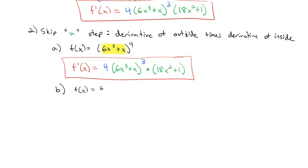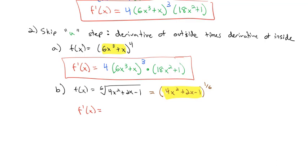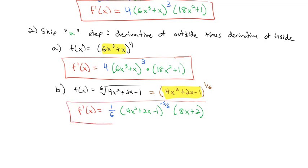Let's try finding the derivative of the sixth root of (4x squared plus 2x minus 1). We treat the root as a fractional exponent, so this is really (4x squared plus 2x minus 1) raised to the 1/6 power. Taking the derivative of the outside: 1/6 times the stuff raised to the negative 5/6 power. Then we multiply by the derivative of the inside, which is 8x plus 2. That gives us our final derivative.